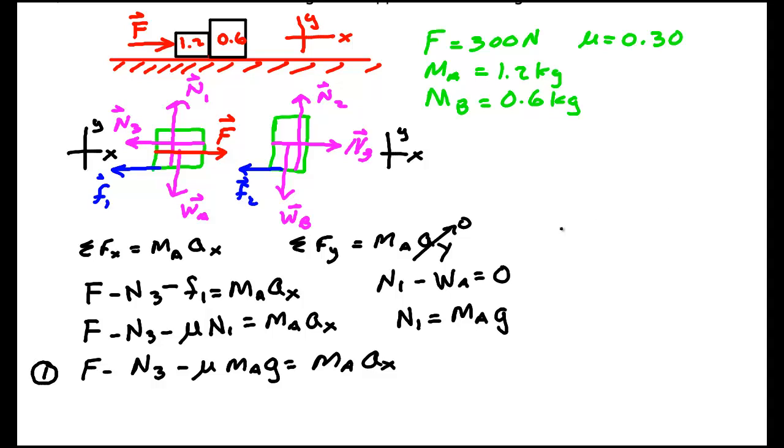Going back up over here, let's deal at least the Y part of the second free body diagram. Sum of the Y forces is MB, because that's the mass of the body in this diagram, times AY, but AY is zero. That's N2 minus WB is zero. So N2 is equal to MB times G.